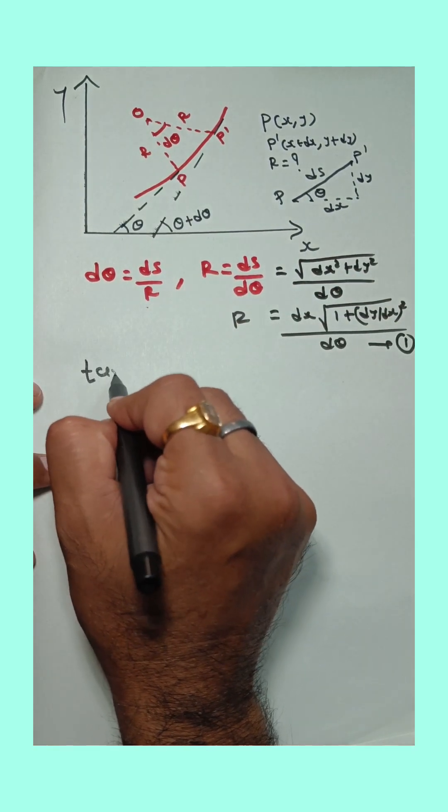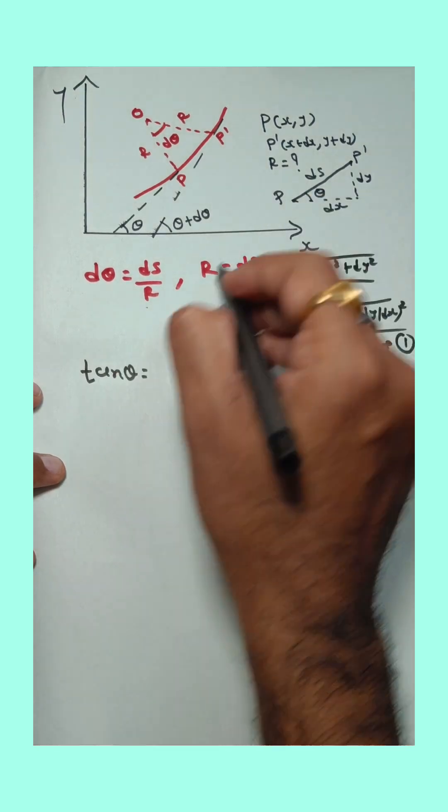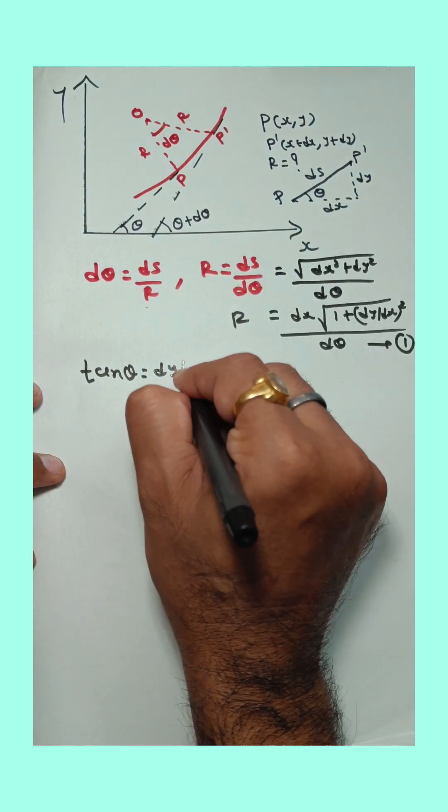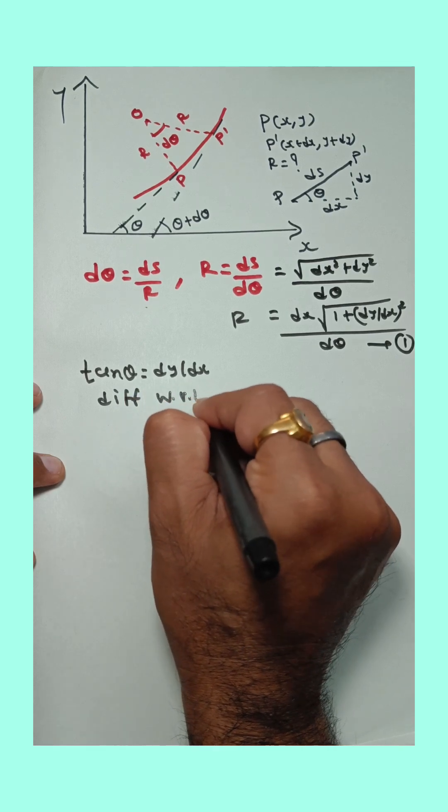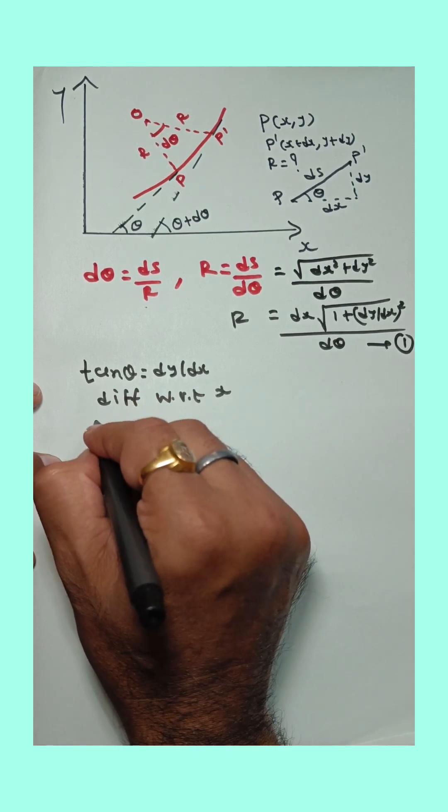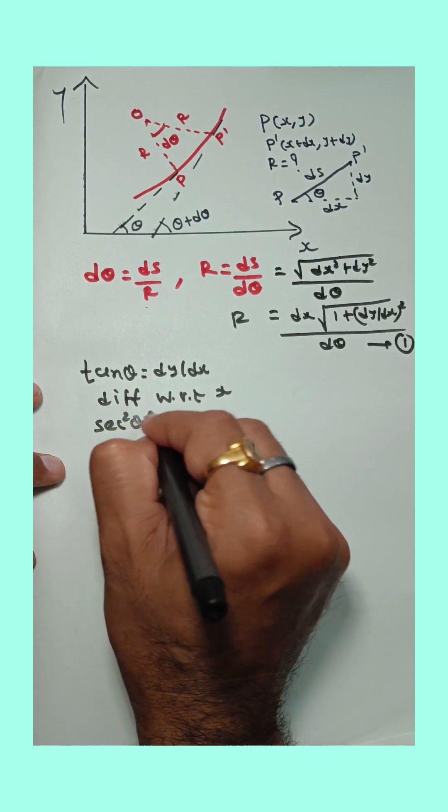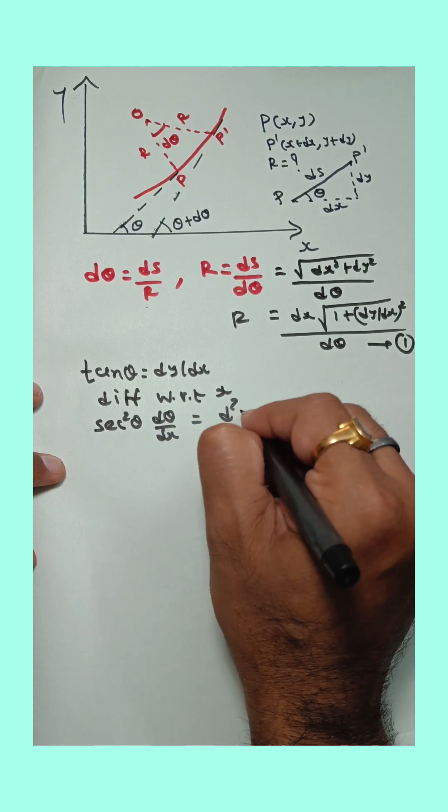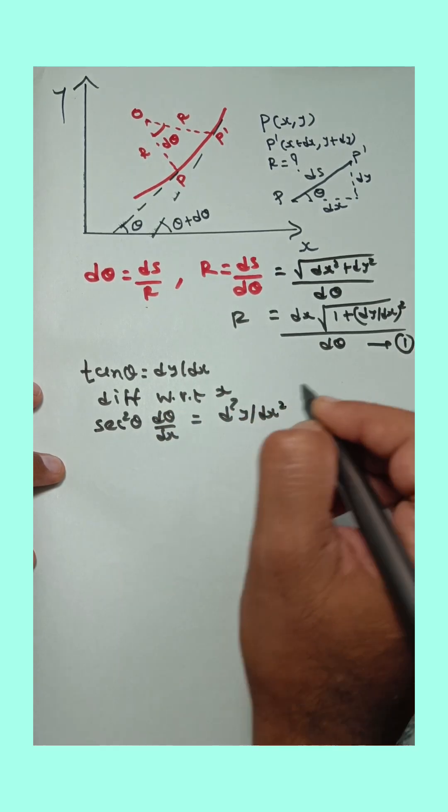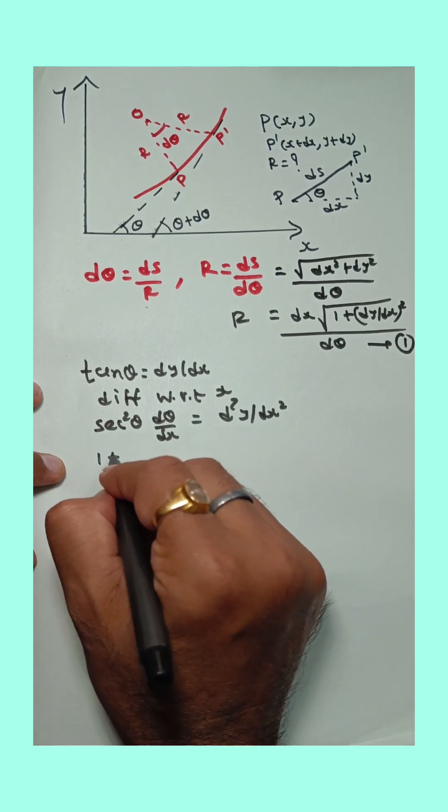Now tan θ from the perpendicular triangle. Tan θ is equal to dy upon dx. Now differentiating with respect to x both sides. So differentiation of tan θ is sec square θ, differentiation of θ with respect to x, dθ upon dx, and right side differentiation with respect to x is d square y upon dx square.